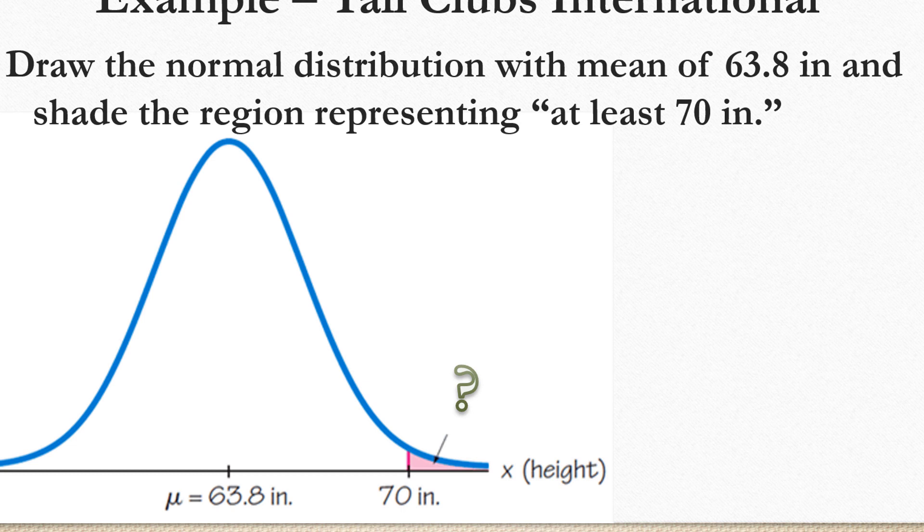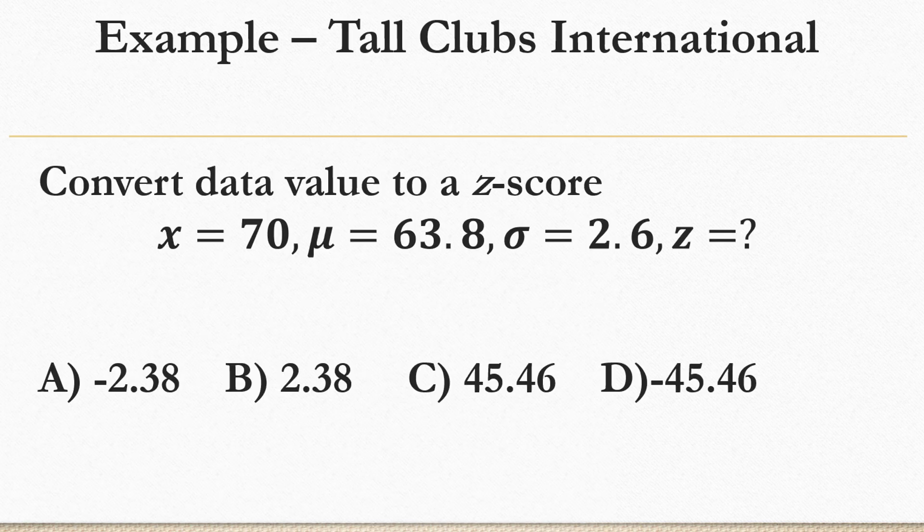So the data value we're interested in is 70 inches. We're going to have to convert that to a z-score to get information we need. So why don't you try it? Try to convert the data value 70 using the fact that the mean is 63.8 and sigma is 2.6 to find the z-score. You can pause the video and work it out.